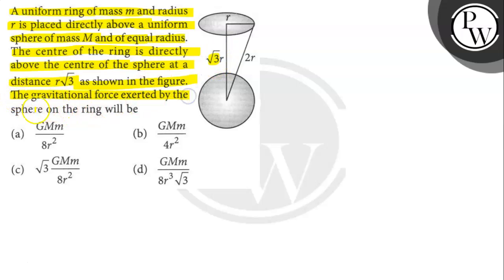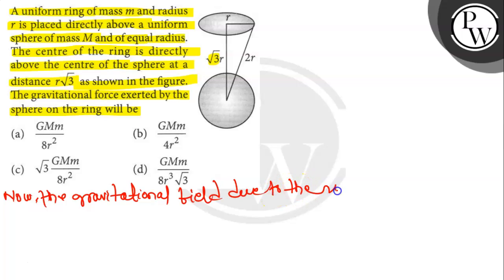The gravitational force exerted by the sphere on the ring will be. So now the gravitational field due to the ring at a distance R equals root 3 r on its axis.